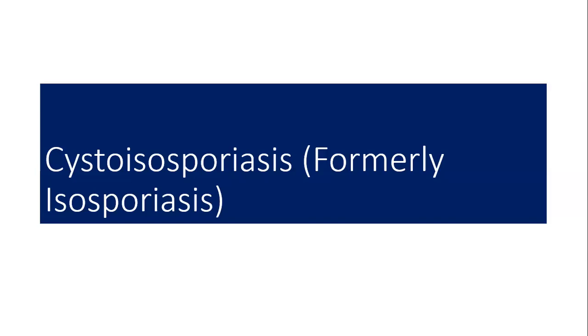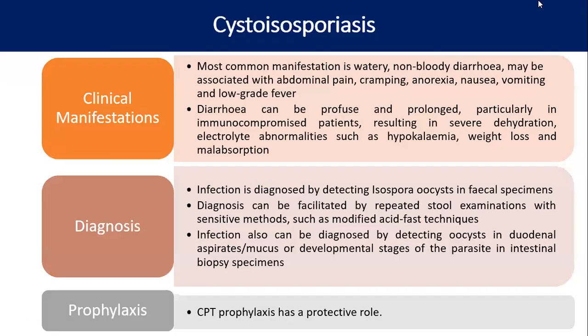Cystoisosporiasis, earlier known as isosporiasis: clinical presentation is non-bloody watery diarrhea, possibly with abdominal pain, cramping, anorexia, nausea, vomiting, and low-grade fever. In immunocompromised patients, diarrhea can be profuse and prolonged, resulting in severe dehydration, electrolyte abnormalities, weight loss, and malabsorption. Diagnosis is by detecting oocysts in fecal specimens using modified acid-fast technique. Infection can also be diagnosed from duodenal aspirates or intestinal biopsy. Prophylaxis is cotrimoxazole CPT prophylaxis.